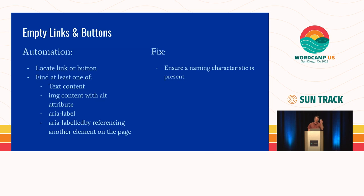For empty links and buttons, you need to make sure there's a naming characteristic. SVG elements have tags that can give them an accessible name — there's a great article on CSS Tricks about accessible SVGs. Font icons can be a little trickier and usually need hidden screen reader text to expose what the control does. It's the same problem whether it's a link or a button — it just matters that you can't tell what it is if it's not labeled correctly.